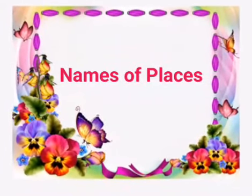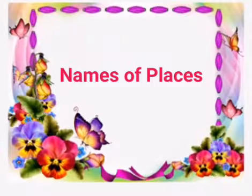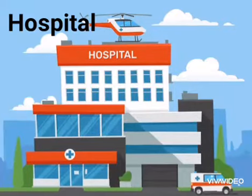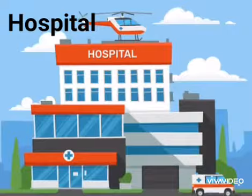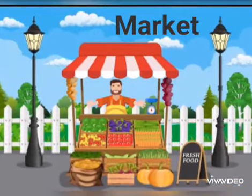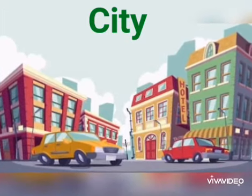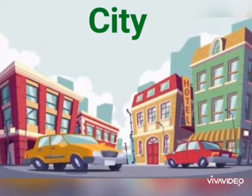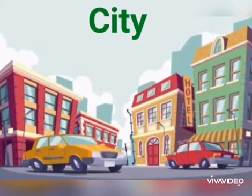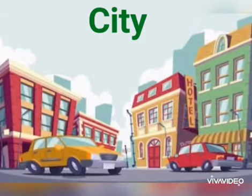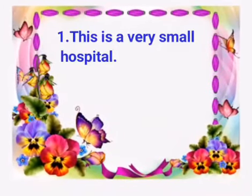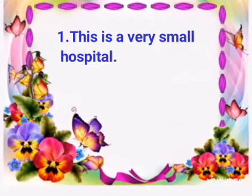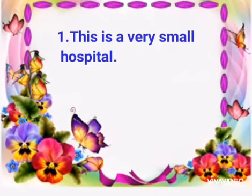Now, names of places like police station, post office, hospital, market, and city are called Nouns. Let's understand this with an example: This is a very small hospital. So, kids, in this sentence, Noun is hospital.